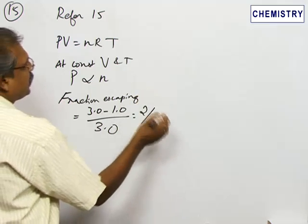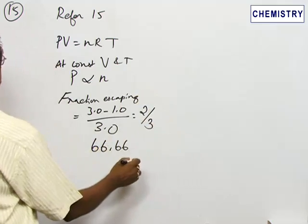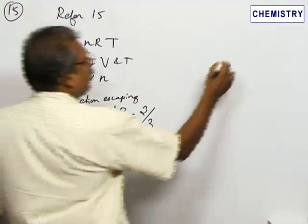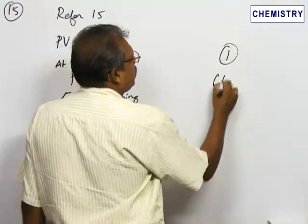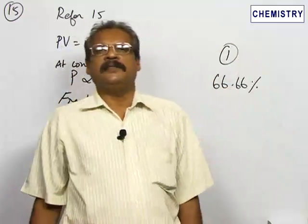So 2 by 3 in percentage terms is 66.66 percent. This is given by option 1. Option 1 is 66.66 percent, so go for option 1.